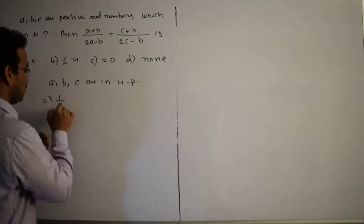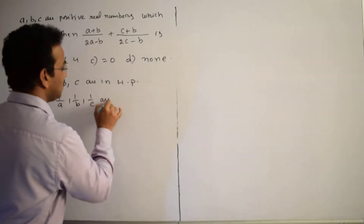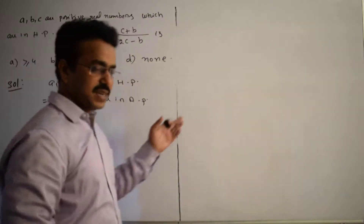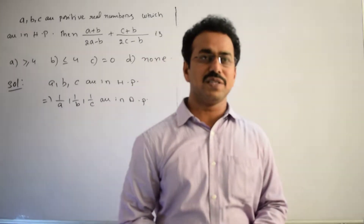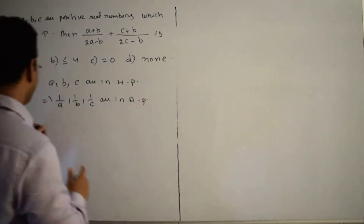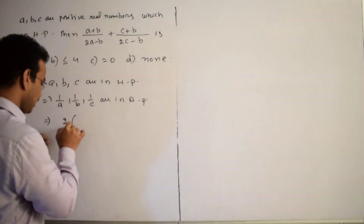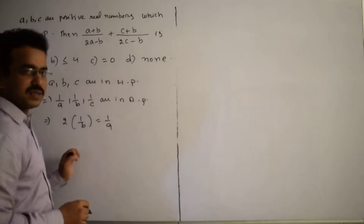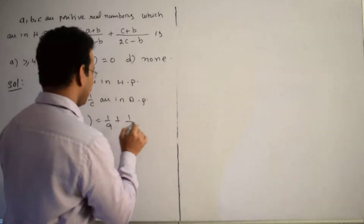This implies 1/A, 1/B, 1/C are in arithmetic progression. There is a standard result: if A, B, C are in arithmetic progression, then 2B equals A plus C. Likewise, this implies 2 × (1/B) equals the sum of the first and last terms: 1/A + 1/C.